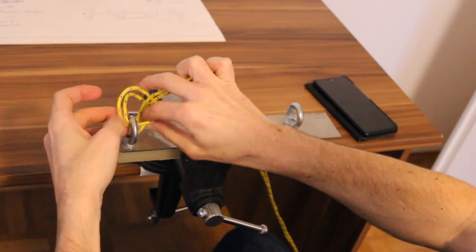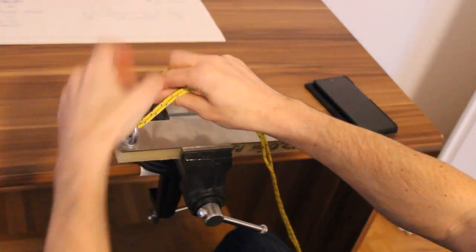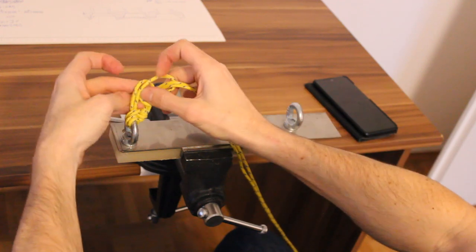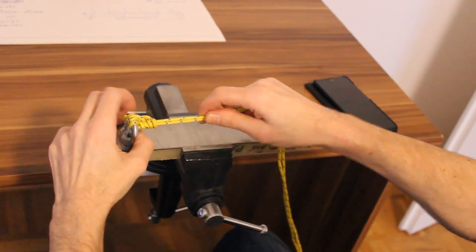The next way around would be maybe a round turn and two half hitches, there's one, there's one, and that'll work.